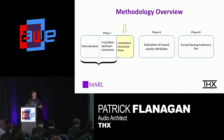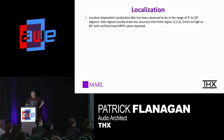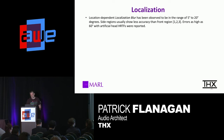So this is a localization test — these are submitted to a science conference for August. Localization is much like externalization, except localization is within a defined location. Localization blur is observed to be in the range of five degrees to 20 degrees. Side regions usually have less accuracy — those regions directly next to you.